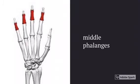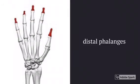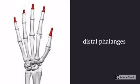These are your middle phalanges, counting from two to five starting with the index finger going to the pinky. These are your distal phalanges, starting with the thumb and going to the pinky, one through five.